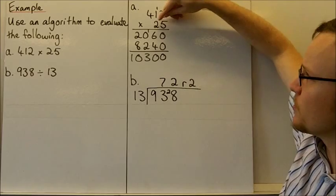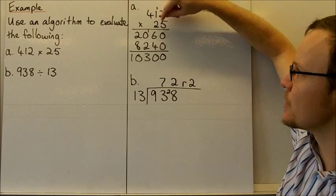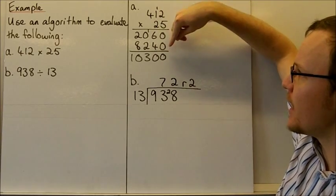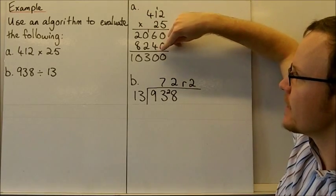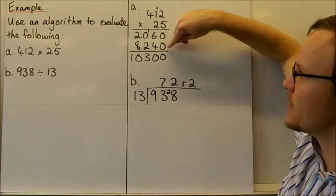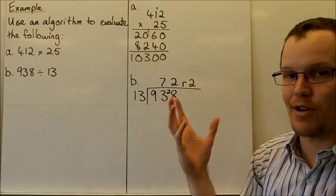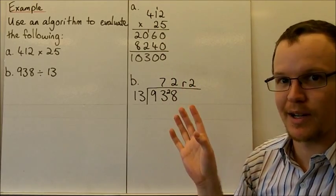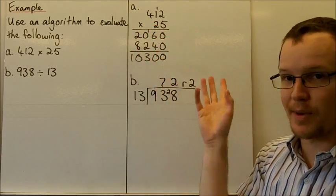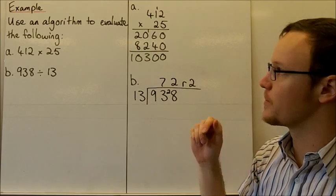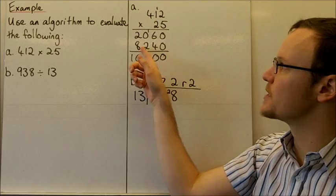Now for the tens column, we've got 2 here, but it's not 2 we're multiplying by, it's 20. We can make sure we're multiplying by 20 and not 2 by adding a zero down here. That forces this into the tens column. Now we can multiply everything by 2 and get the result as if multiplying by 20. So 2 × 2 = 4, 2 × 1 = 2, and 2 × 4 = 8.